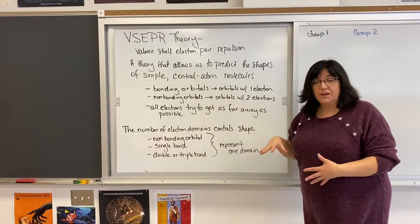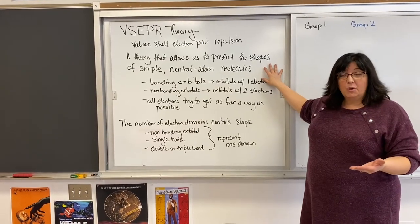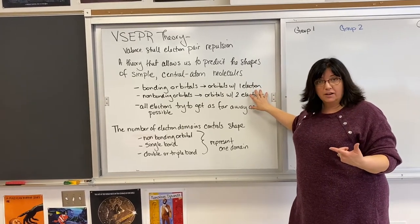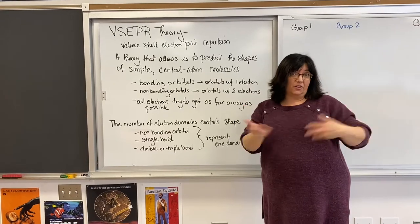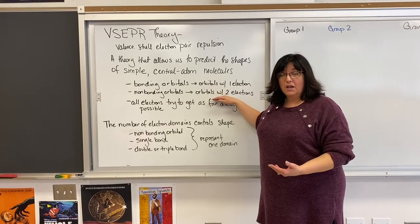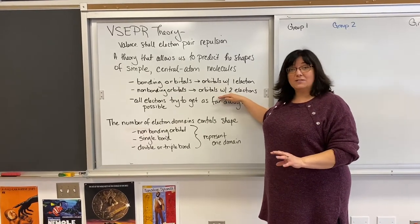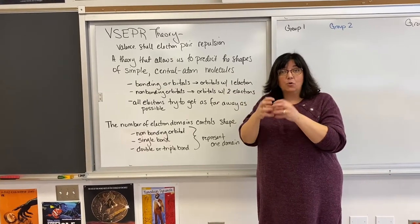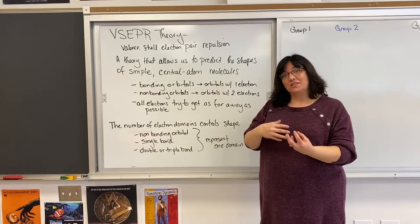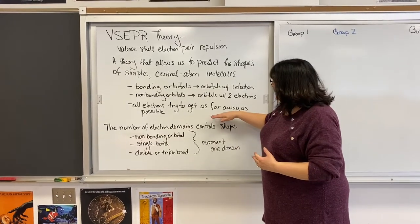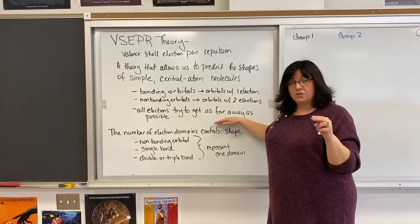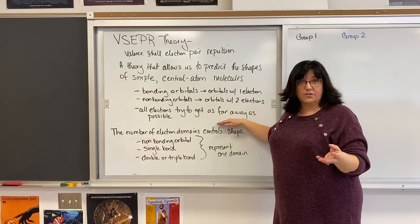There are a couple things to keep in mind. We need to know about what's referred to as a bonding orbital — an orbital that has only one electron, because that's where you're going to have another atom form a covalent bond. But non-bonding orbitals are important as well. A non-bonding orbital already has two electrons in it, and because it has electrons, it's going to cause repulsion and influence the shape of molecules. Those orbitals with electrons, whether one or two electrons around the central atom, are going to try and get as far apart as possible.